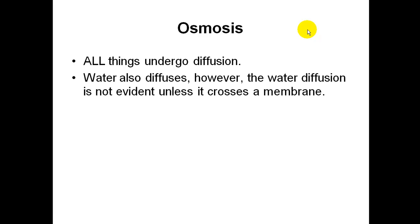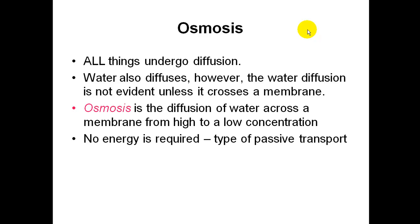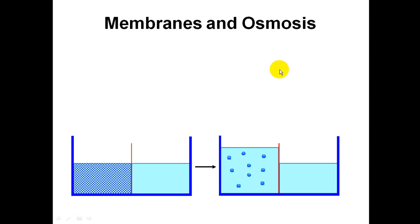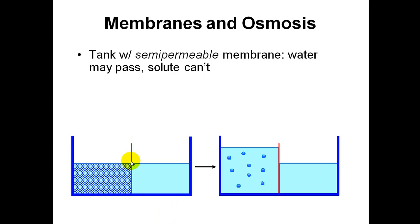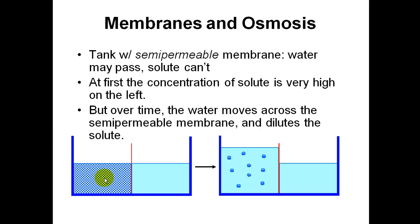Osmosis: all things undergo diffusion, and water also diffuses. However, water diffusion is not evident unless it's crossing a membrane. Osmosis is the diffusion of water across a membrane from a high concentration to a low concentration. No energy is required, so it is passive transport. Here is a tank with a semi-permeable membrane — water may pass through but the solute cannot. The concentration of solute is very high on the left, so water moves from the right to the left across the membrane, causing the water level to rise and diluting the solute.